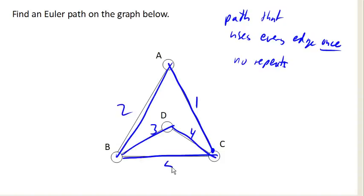And notice now, I have covered every single edge of the graph without repeating any of them. Notice though I started here, and I ended over here, so I have not returned to my starting point. This would be an Euler path.